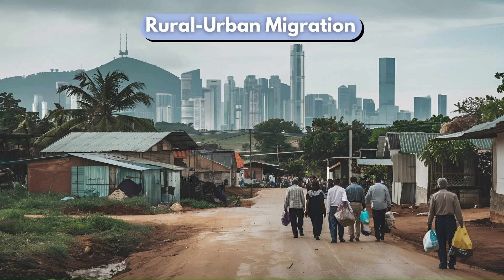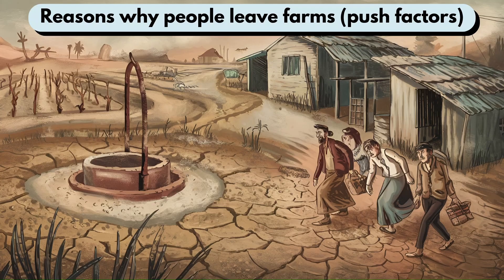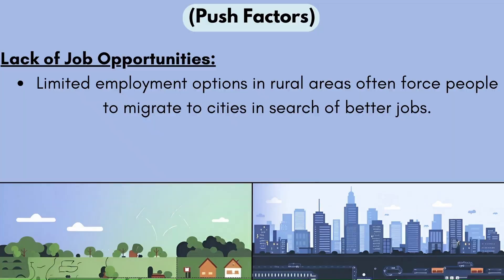When dealing with rural-urban migration there are two things to understand: push factors and pull factors. Push factors are reasons why people leave rural areas — factors that push people away. These include the lack of job opportunities, harsh living conditions, and the lack of entertainment. The first push factor is the lack of job opportunities — limited employment options in rural areas often force people to migrate to cities in search of better jobs.